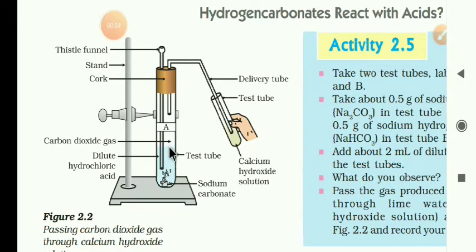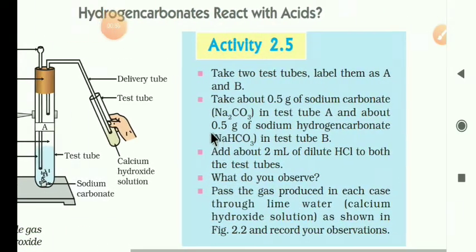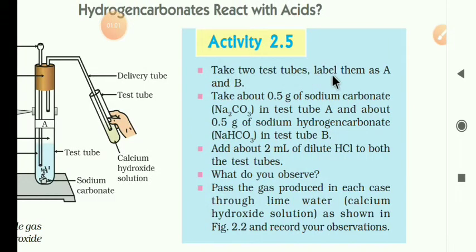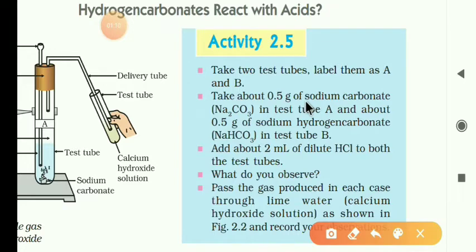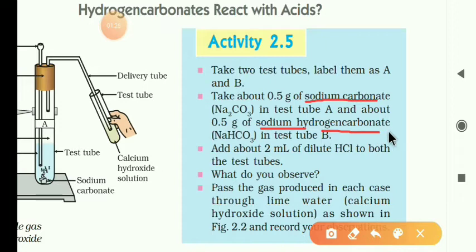We will go for activity explanation. Take two test tubes, label them A and B. In test tube A, add 5 grams of sodium carbonate — chemical formula Na2CO3, also called washing soda. And about 0.5 grams of sodium hydrogen carbonate, NaHCO3, also called baking soda, in test tube B.